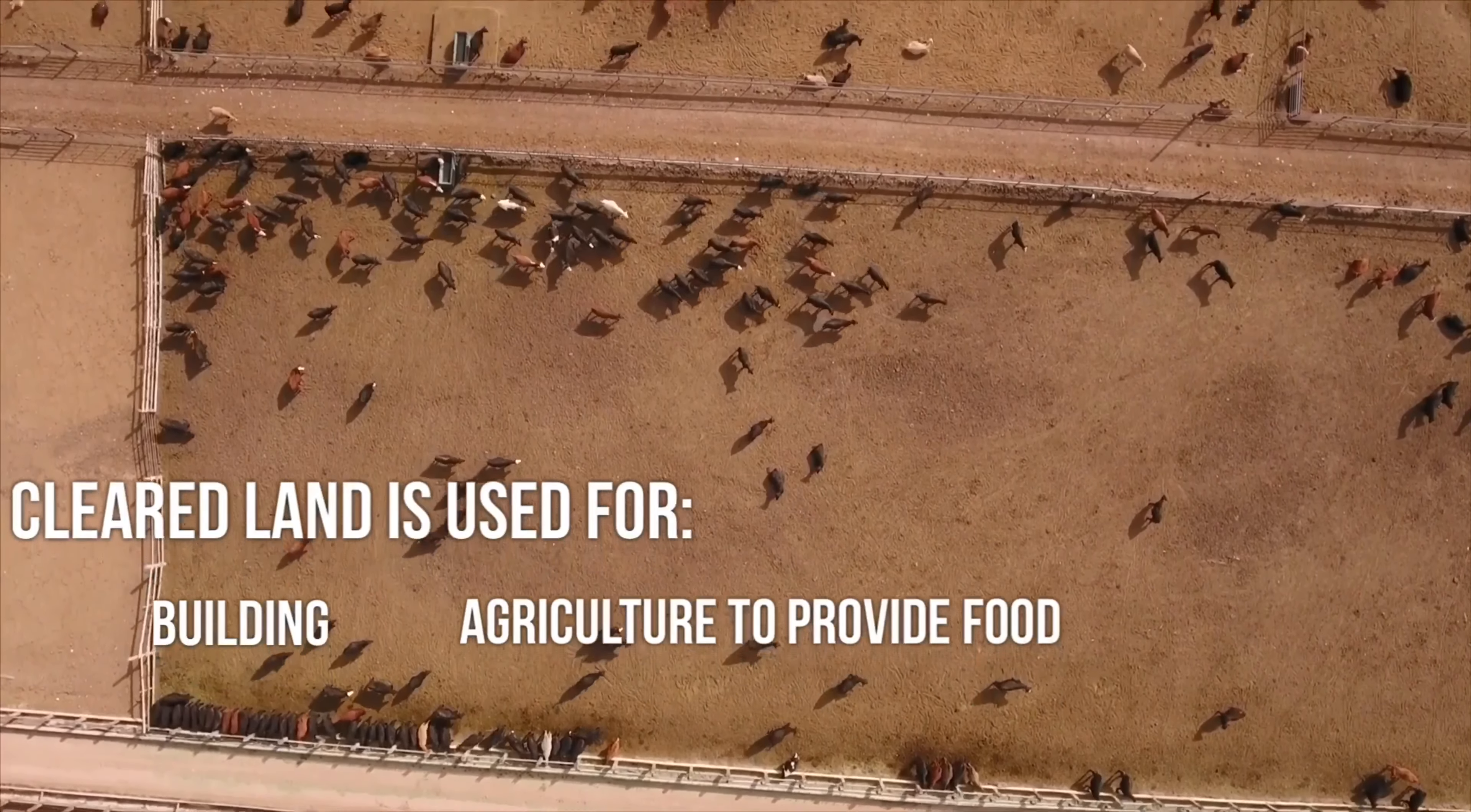The next part that we could talk about is about how the land is cleared. And one of the reasons it's cleared is for buildings for the ever-increasing population and also for agriculture to provide food. And this is things such as cattle ranching. And you could also use the example of the rice fields.